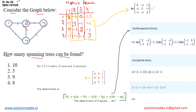After solving, we get the value 8. So by putting the values into the formula and solving, the total number of spanning trees is 8. The correct option for this question is option number 4.